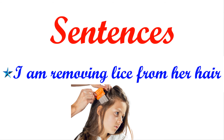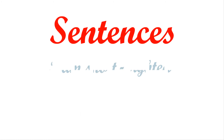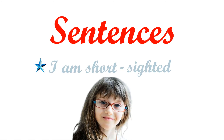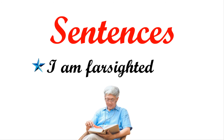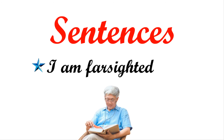मेरे दूर की नजर कमजोर है — I am short sighted. मेरे करीब की नजर कमजोर है — I am far sighted. I think आपको आज के sentences और आज का word बहुत अच्छी तरह से समझ आ गया होगा।